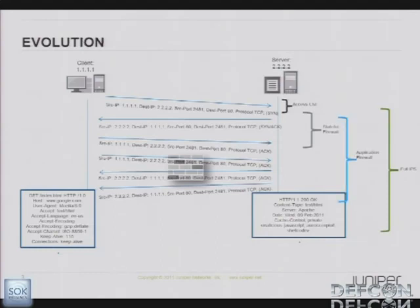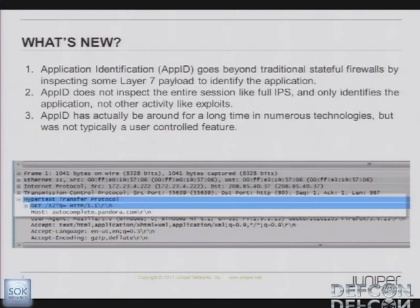We got full IPS to handle the limitations of stateful firewalls and access lists. And now we have application firewalls. As you'll see, they cover a lot less than what full IPS did. So really, what's new here? What differentiates this network application technology? And again, don't think it's necessarily a separate box — a lot of it is just integrated into the current generation of firewall products.